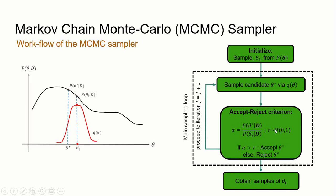After sampling theta_star, the posterior is evaluated at this candidate sample and compared to the posterior value at the current sample. This comparison is done by taking the ratio of these two quantities, represented as alpha. A random sample r is generated from a uniform distribution between 0 and 1. If alpha is greater than r, the candidate sample is accepted and the proposal distribution shifts to be centered above this new sample. Otherwise, if rejected, the proposal distribution stays and generates the next candidate sample. This acceptance-rejection loop repeats until n samples are obtained.